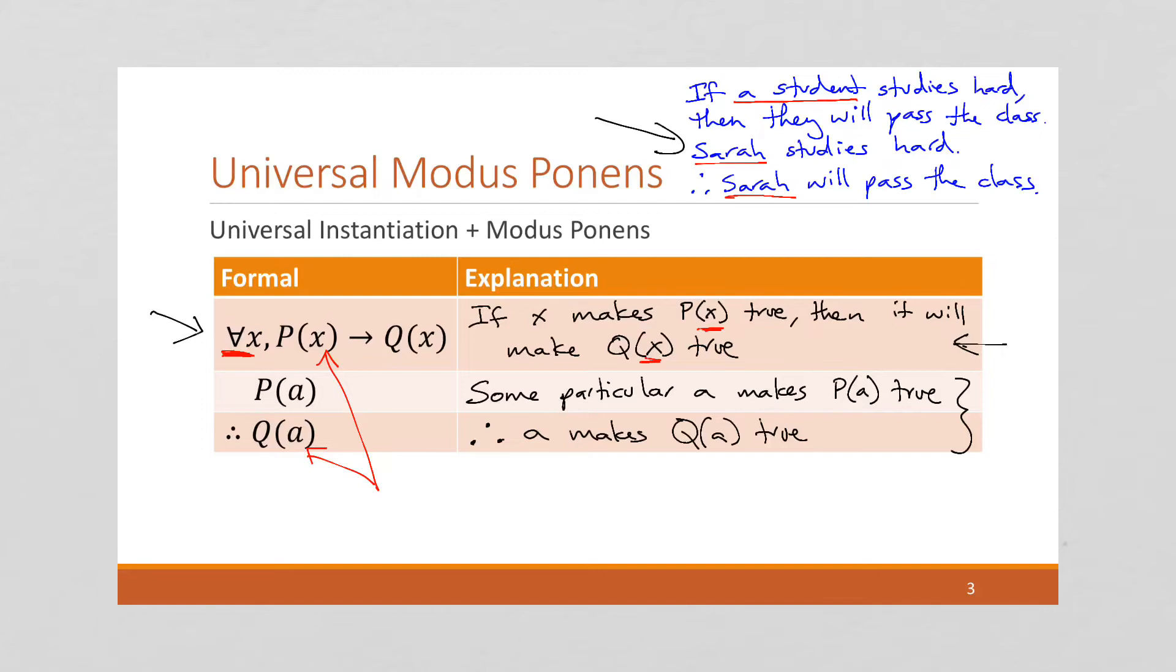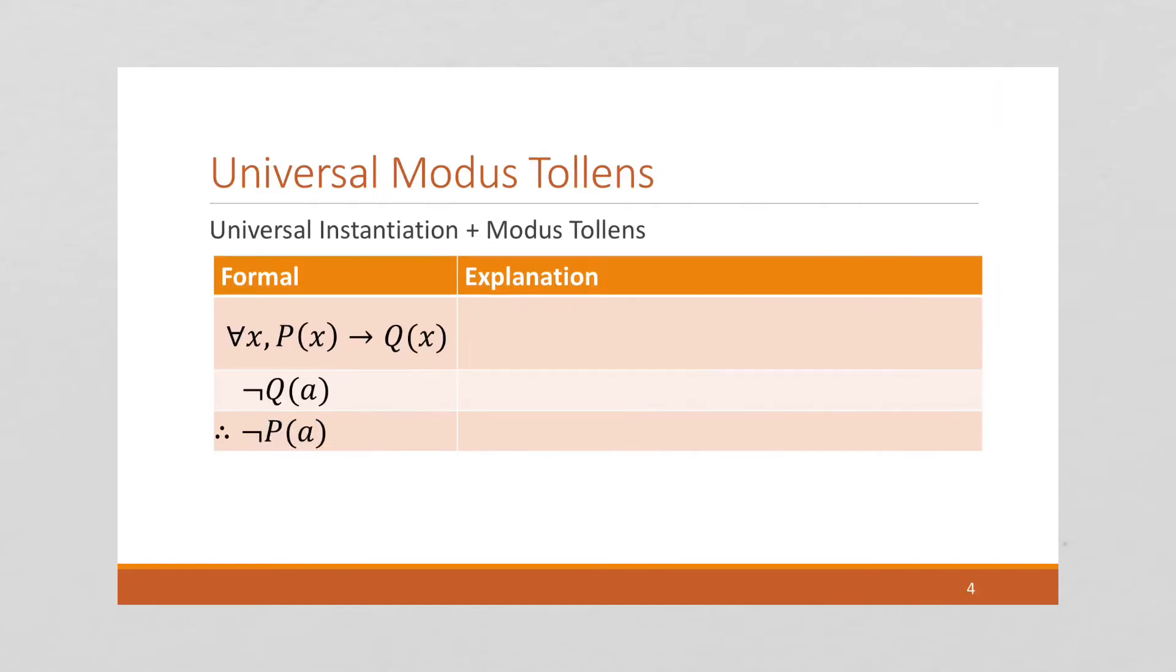So, in this case, we're going to see more of this symbology later. But I can say that A is an element of whatever our set or group X is. So, let's do another one. Let's do universal modus tollens.